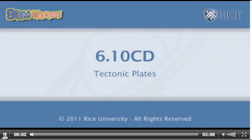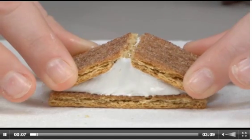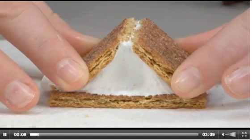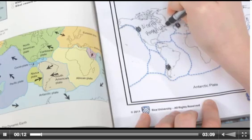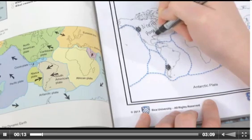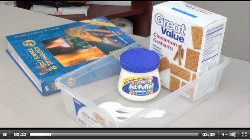Tectonic Plates: In this activity, students model tectonic plate movement to discover what happens at plate boundaries and map the Earth's eight major tectonic plates. Materials needed: one full graham cracker sheet, one paper towel, one heaping tablespoon of marshmallow fluff.